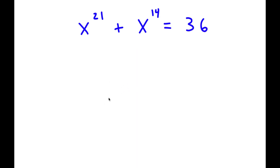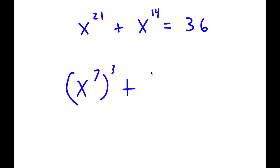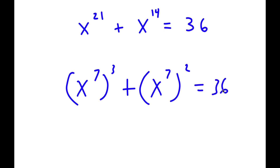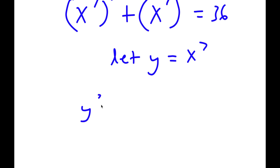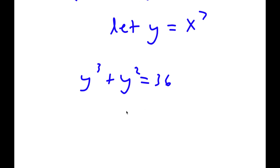In this problem, I have x to the power of 21 plus x to the power of 14 is equal to 36. I'm first going to rewrite x to the power of 21 as x to the power of 7 to the power of 3, and x to the power of 14 as x to the power of 7 to the power of 2. Now I'm going to let the variable y equal x to the power of 7, so I have y to the power of 3 plus y to the power of 2 equals 36. Subtracting 36 from both sides gives y cubed plus y squared minus 36 equals 0.